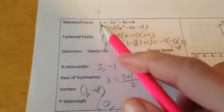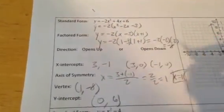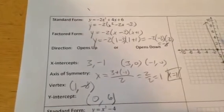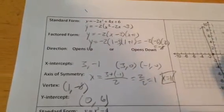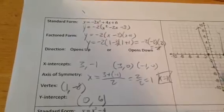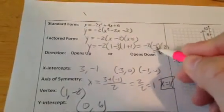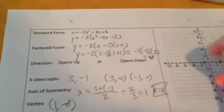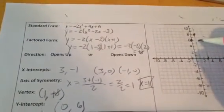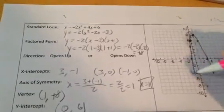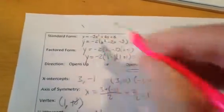Wait — negative 2 times negative 2 times 2 is a positive 8, not negative 8. Good thing I caught that. So the vertex is (1, positive 8). The y-intercept when x is 0 gives y equals 0 plus 0 plus 6, which is 6. I get a mirror point on the other side of the axis for free. The parabola opens down, as expected, because the a value is negative.